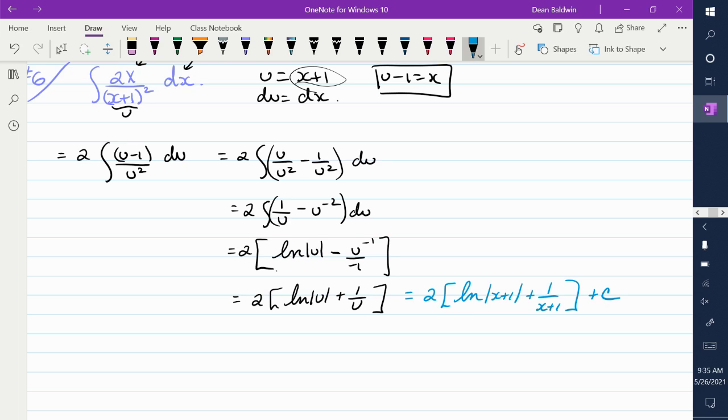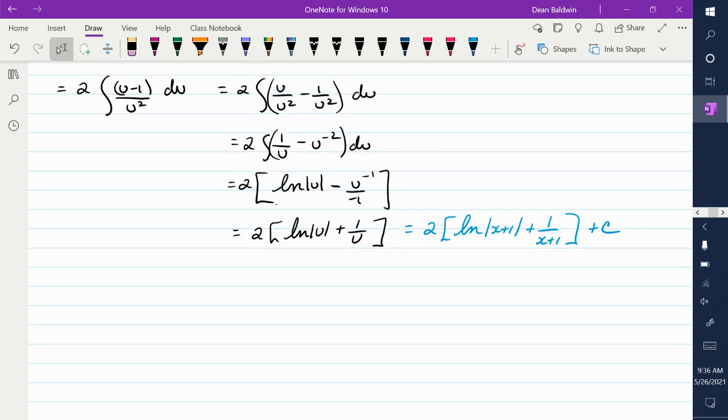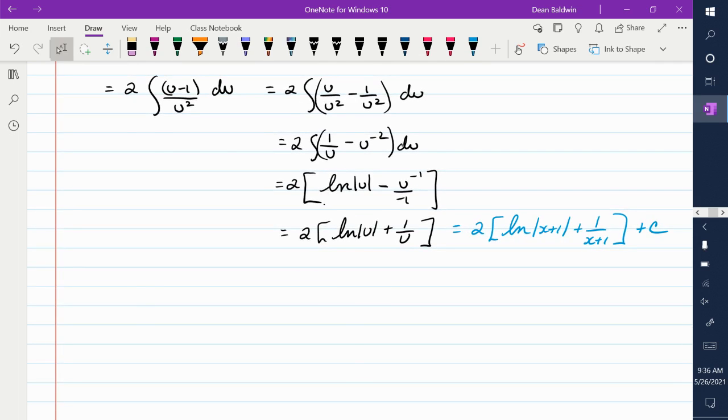And there you go. Is that okay? So it's the same stuff we did before, except now part of the integral will turn into a natural log. Part of it is just add 1 to the exponent and divide. Try another one here.